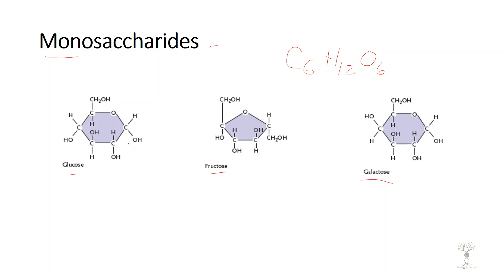With glucose there are five carbons in the ring and one carbon outside. Fructose has four carbons in the ring and a carbon on each side outside of the ring. Galactose simply has the hydrogen and hydroxyl group flipped compared to glucose. So they all have the same chemical formula.